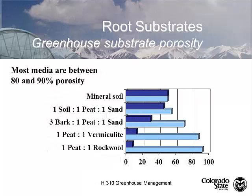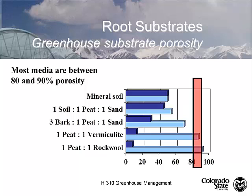When we look at pore space or porosity, mineral soil is about 50/50 air space and solid space. When we start blending in peat moss — one part mineral soil, one part peat moss, one part sand, which was the common potting soil through the 1960s and 70s — the air space, shown as the light blue bar, starts to get greater. We add bark to the mix, it's even greater. When we add vermiculite, we can see we're getting up into the range of 80–90% porosity, which is ideal for greenhouse container production.